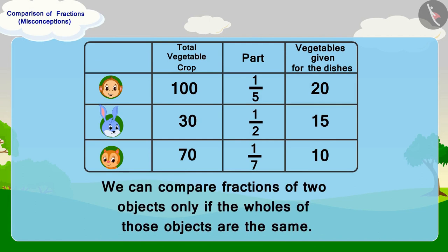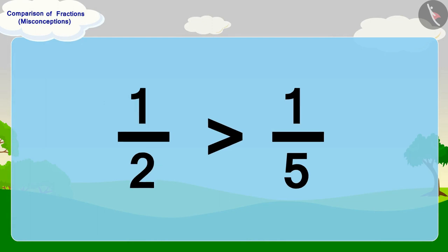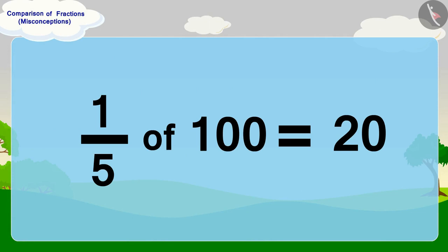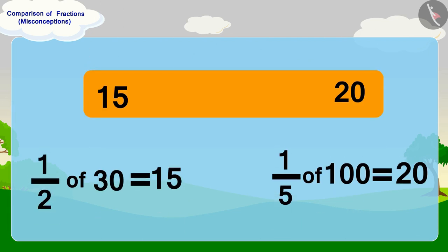Children, keep in mind that we can compare fractions of two objects only if the wholes of those objects are the same. As we know, the fraction one-half is more than the fraction one-fifth. But if we talk about one-fifth of 100, which equals 20, and half of 30, which equals 15, then we can see that half of 30 is actually smaller than one-fifth of 100.